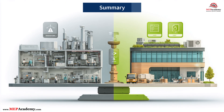While process cooling and comfort cooling share some similarities in principles and equipment, they differ significantly in design objectives, regulatory requirements, and energy calculations. Engineers and contractors must consider these distinctions when designing, installing, and maintaining cooling systems to ensure compliance, efficiency, and reliability. Understanding the unique requirements of each cooling type helps in selecting the right equipment, optimizing energy use, and meeting industry standards for safety and performance. Whether cooling a manufacturing line or an office building, applying the correct design approach is critical to achieving the desired outcomes.